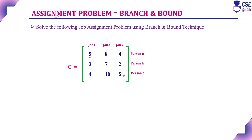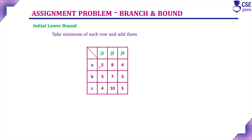We have already discussed two examples — I will provide the link in the description for your reference. Now, the job and person are given. The first step is to compute the initial lower bound value. We calculate it by taking the minimum value in each row and adding them. The minimum value in the first row is 4, second row is 2, and third row is 4. Adding all these values gives the initial lower bound value, which is 10. This is the 0th level of the state space tree.